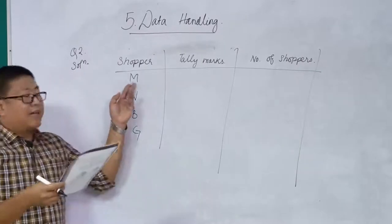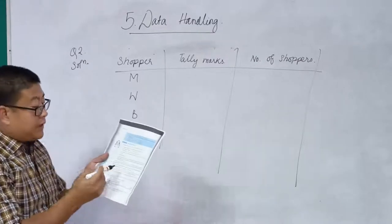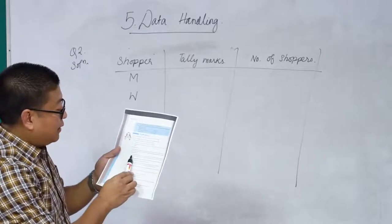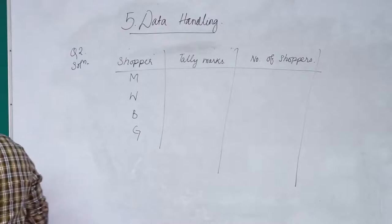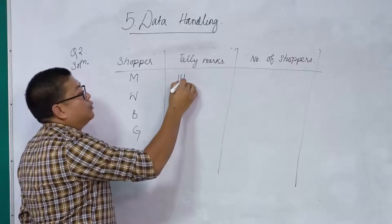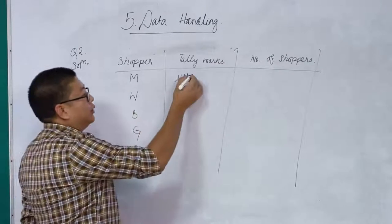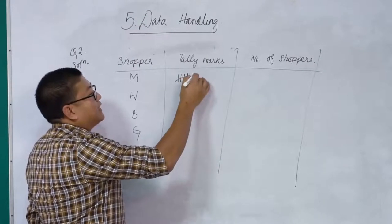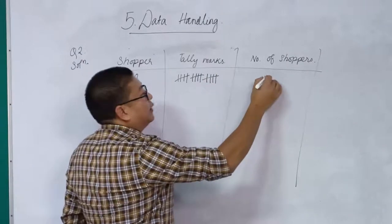We will first write the categories: shoppers were men, women, boys, and girls. Then we write tally marks and number of shoppers. Let's count how many times M appears. Counting through the data: M appears 15 times. In tally marks, every group of 5 is shown by drawing four vertical lines and then striking through them. So for 15 we have three groups of five, and we write 15 as the frequency.